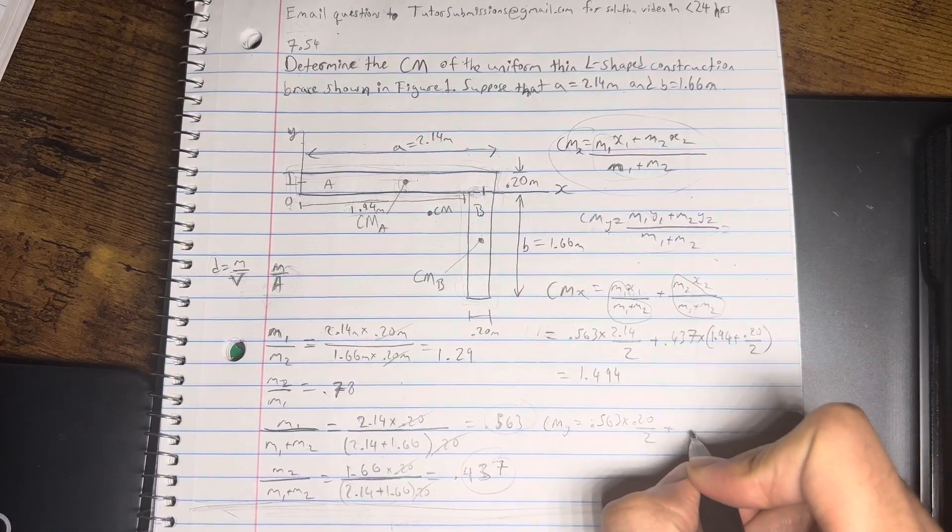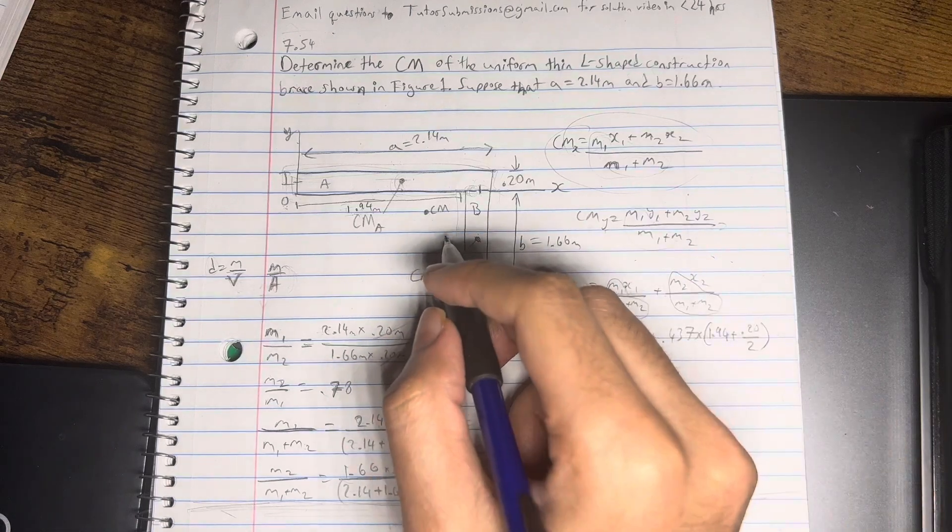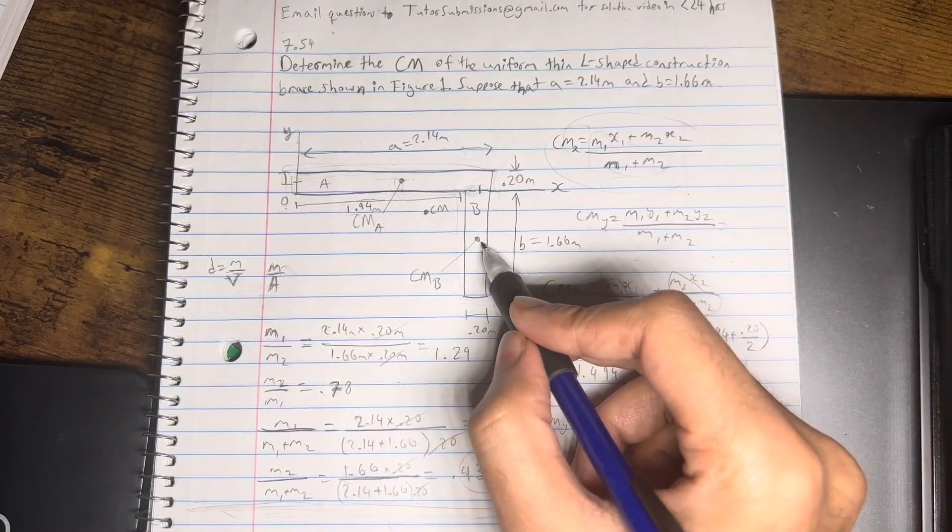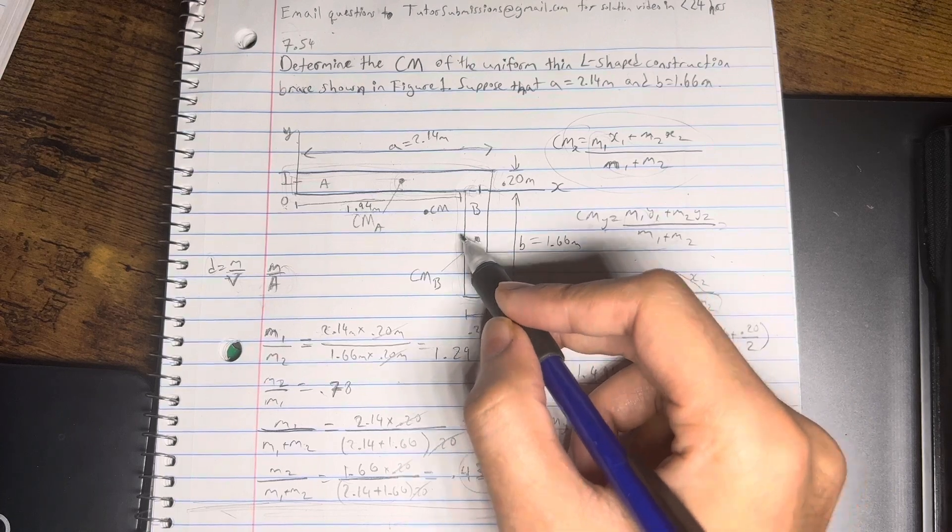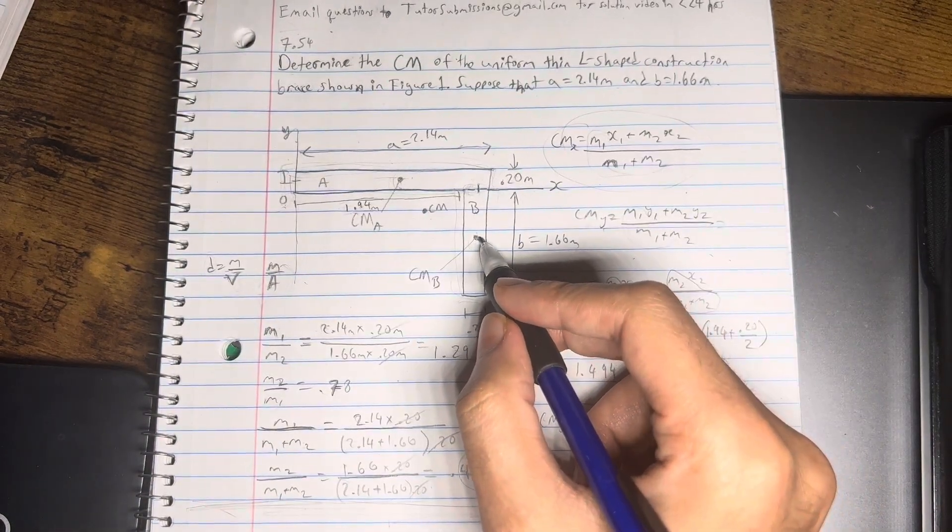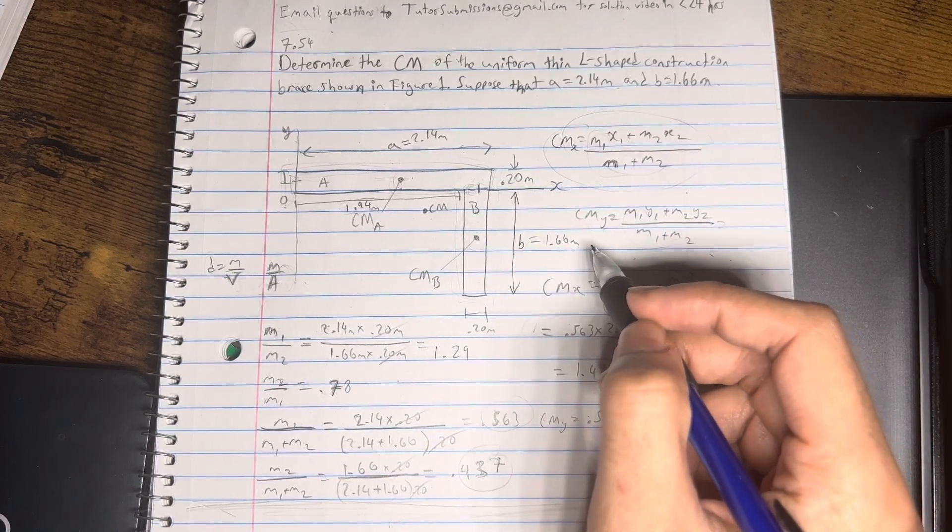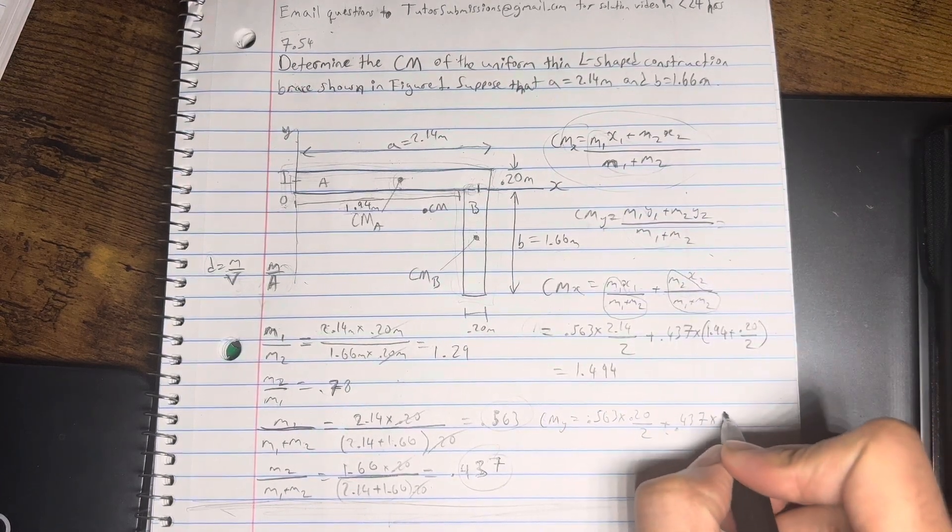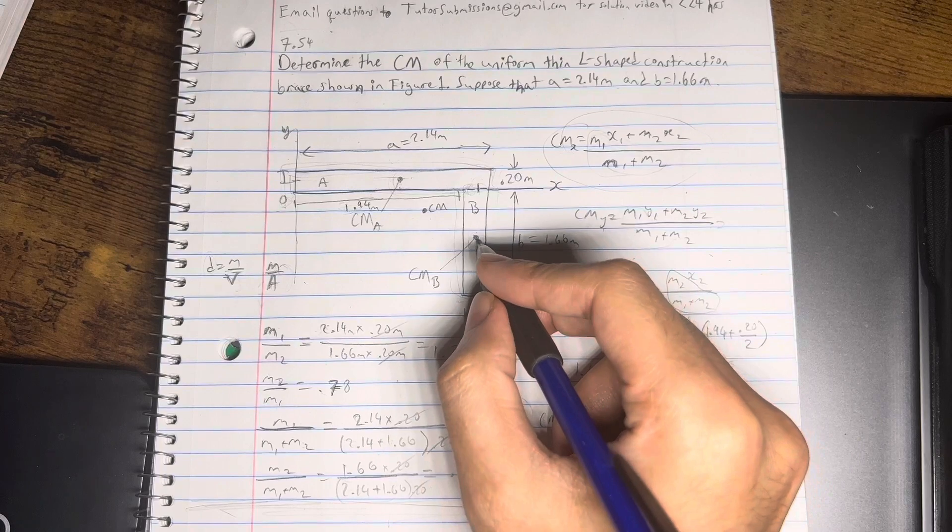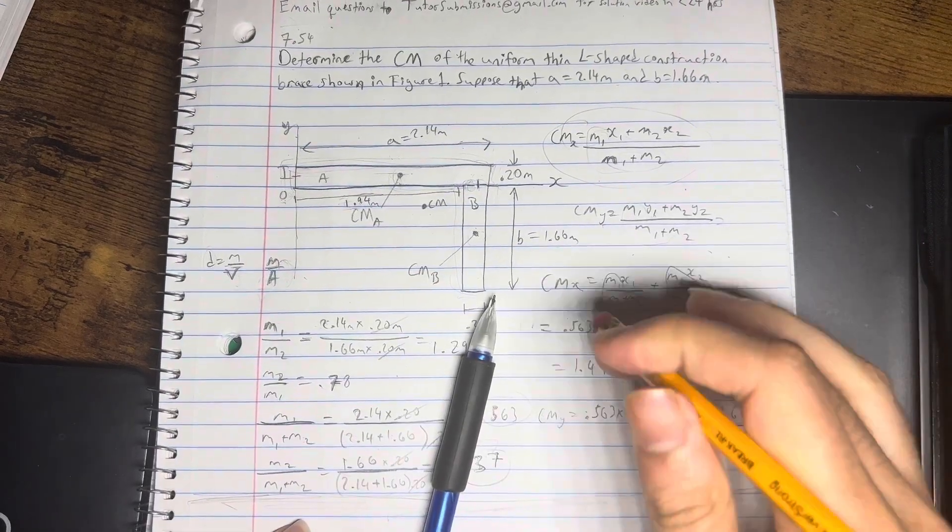And then plus 0.437 times the y-coordinate of the second one. So, here's another point where sometimes people go wrong. Because the y-coordinate of block B is down here, this is actually going to be negative. As you can see, if zero is here, this is positive, this coordinate is going to be negative. So, what we're going to do is take B or 1.66 divided by 2 and then just change this to a negative. So, 1.66 divided by 2 to get the center here. And then we're going to go ahead and change this to minus.